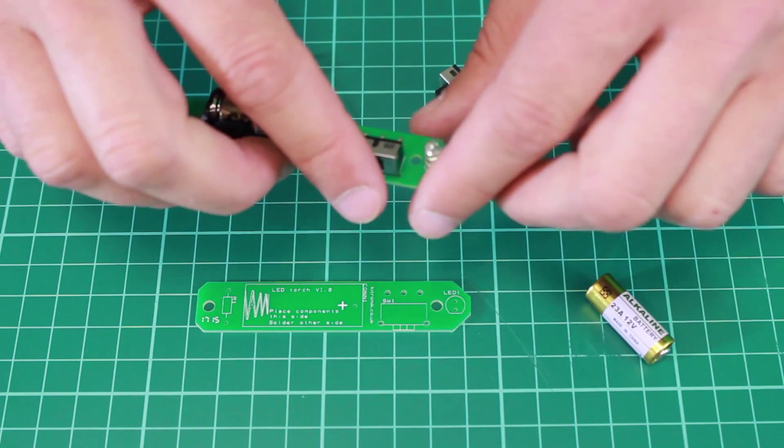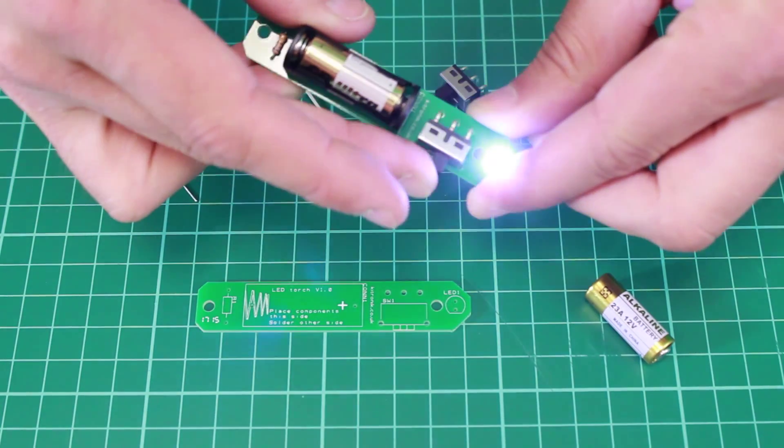So now we're going to take a look at how all these parts are put together to form the circuit to produce this torch.